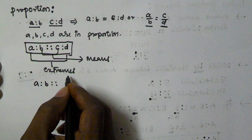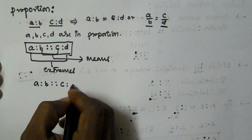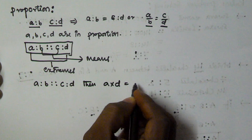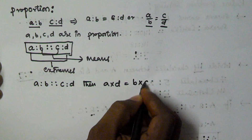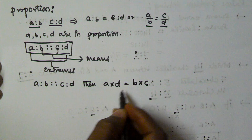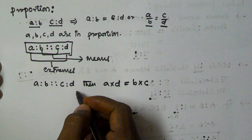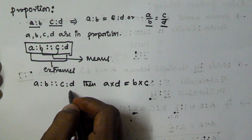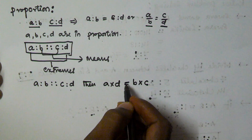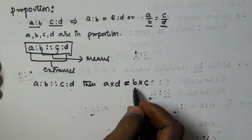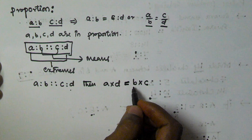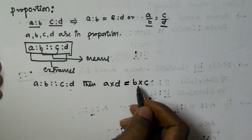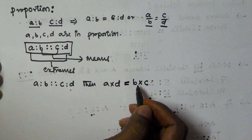If A colon B is in proportion to C colon D, then A multiplied by D is equal to B multiplied by C. That means the multiplication of extremes is equal to the multiplication of means. So if A, B, C, D are four numbers in proportion, the multiplication of extremes is always going to be equal to the multiplication of means.